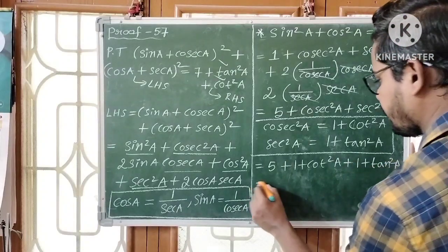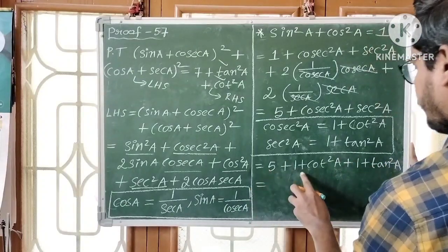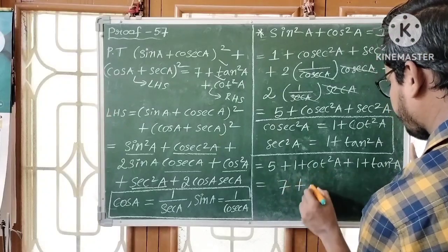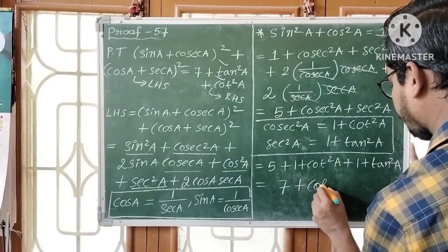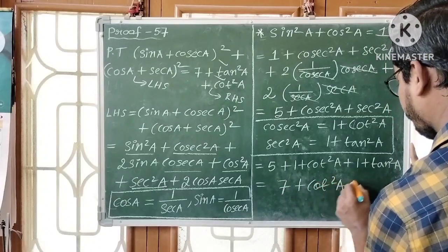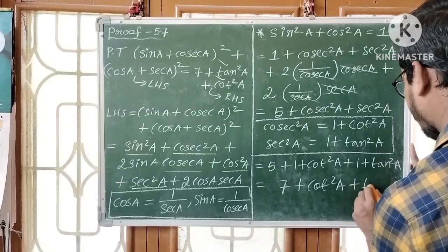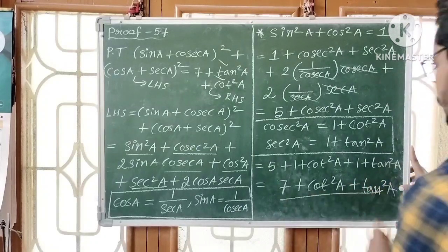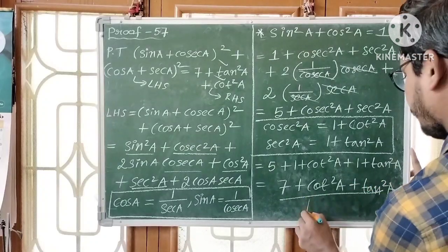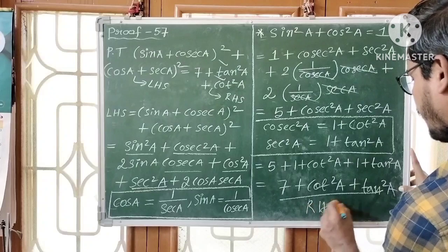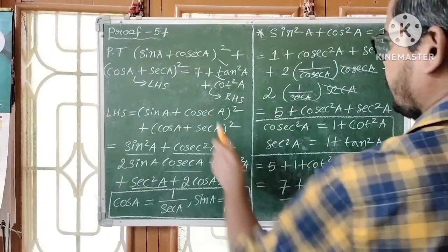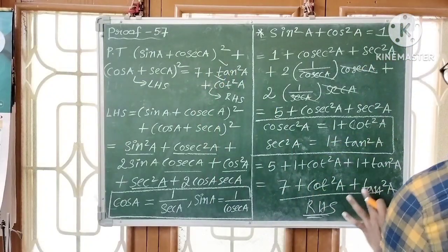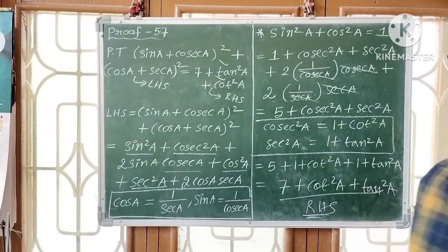Simplifying further: 5 + 1 + 1 = 7, so we get 7 + cot²a + tan²a. Therefore LHS equals 7 + tan²a + cot²a, which equals RHS. Hence proved.